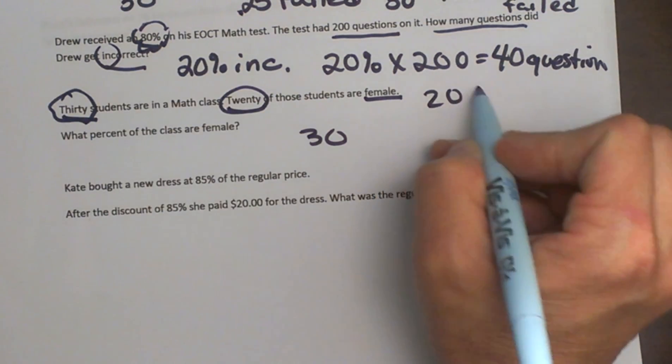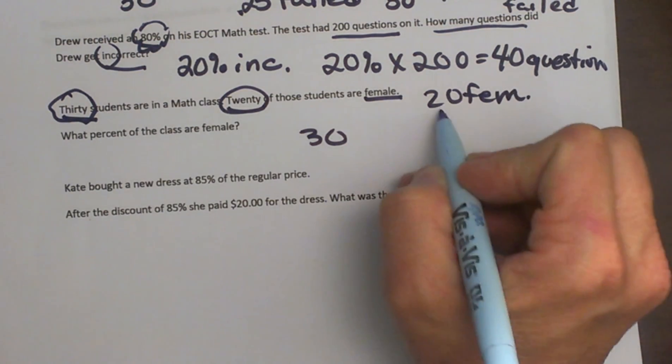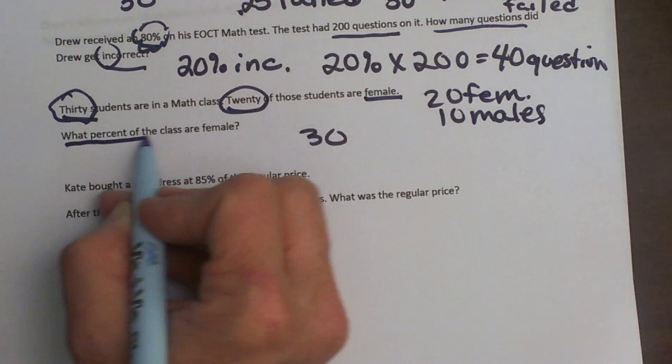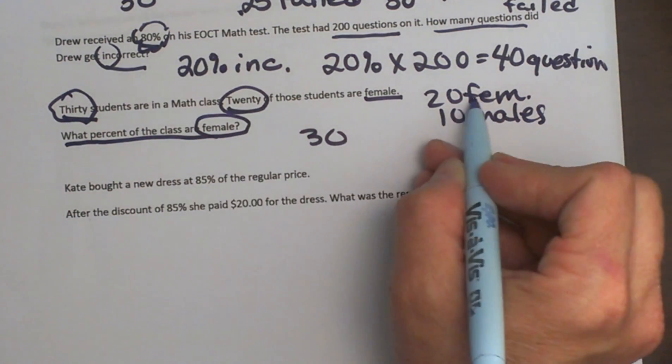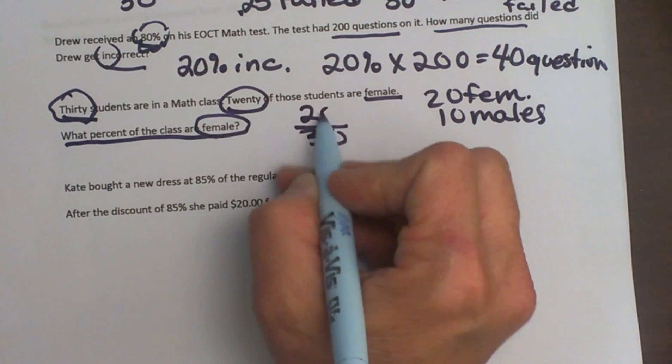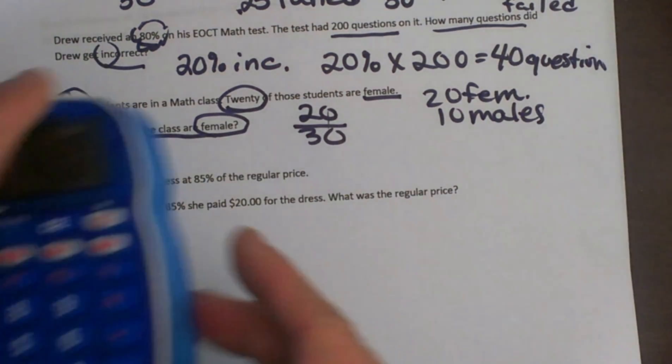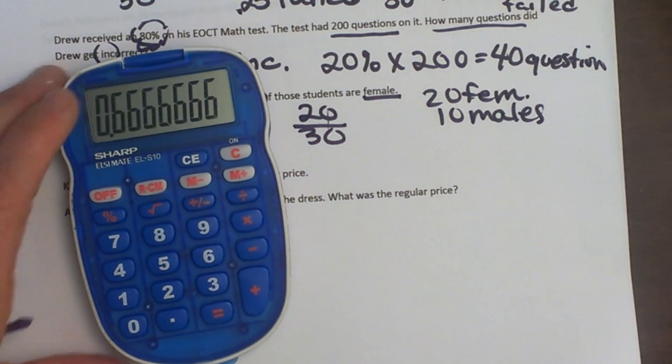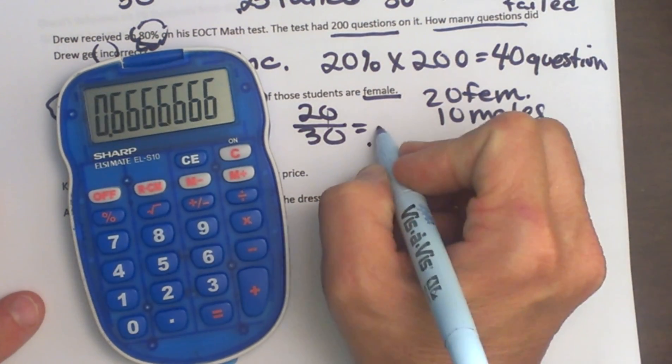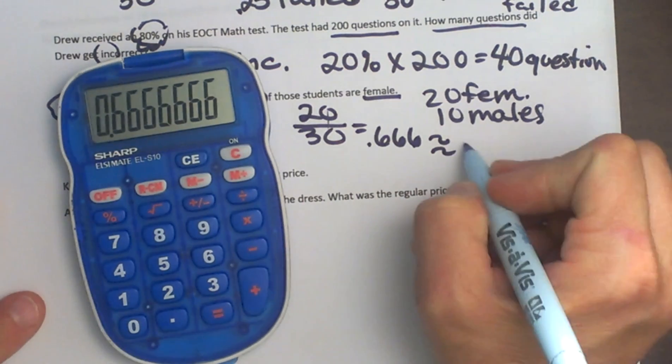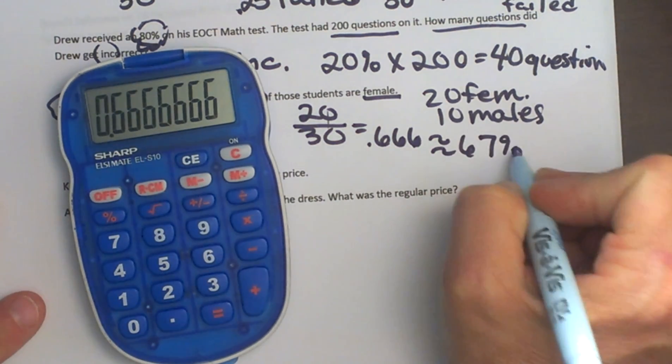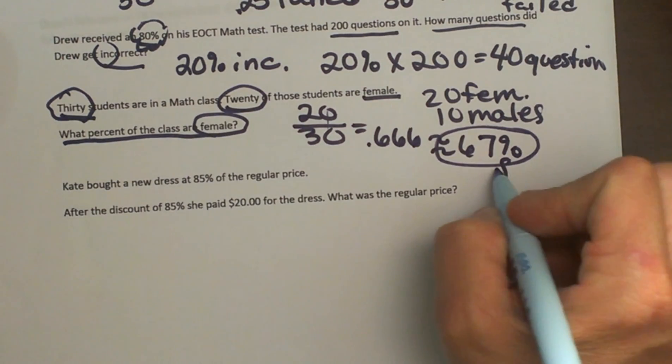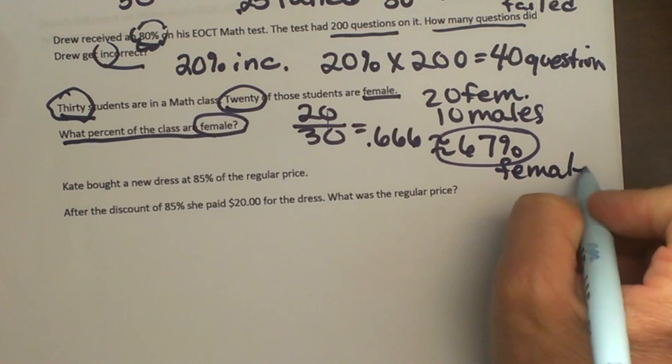So we have 20 females and that means we would have 10 males, right? So the question says what percent of the class are females, so let's take our female, which is 20 out of the 30, part over the whole. 20 divided by 30 is 0.66 repeating, which when we round it off, that will be 67%. 67% of the class are females, so always put your unit with a word problem.